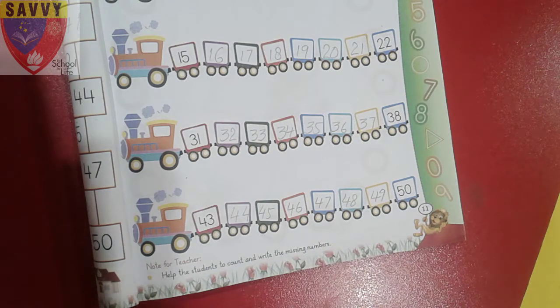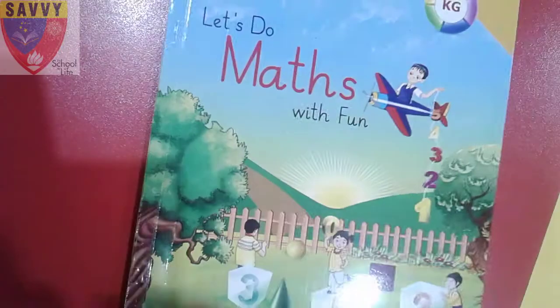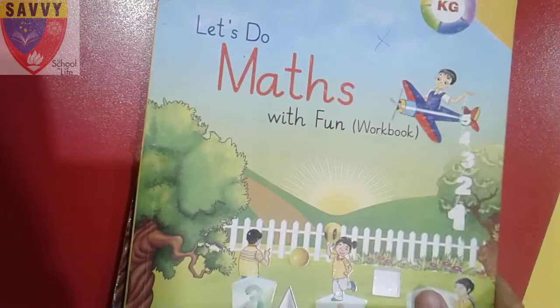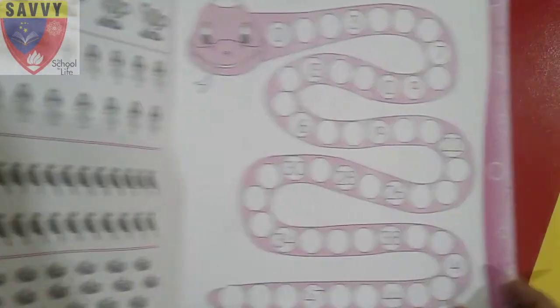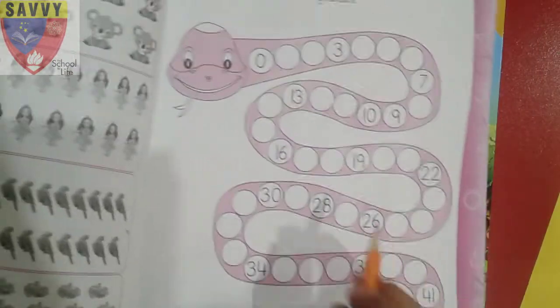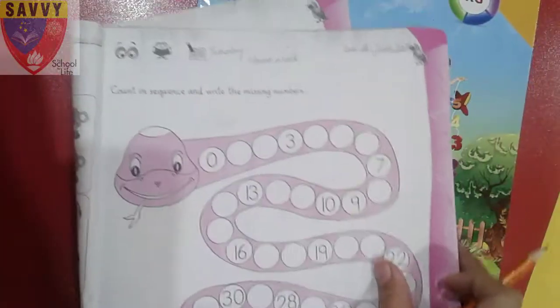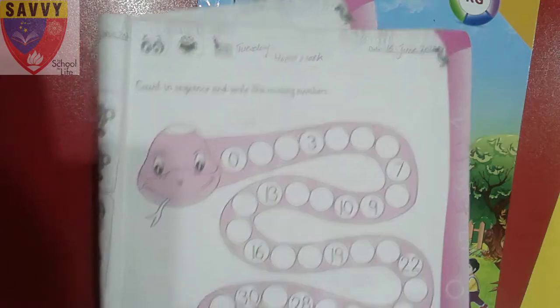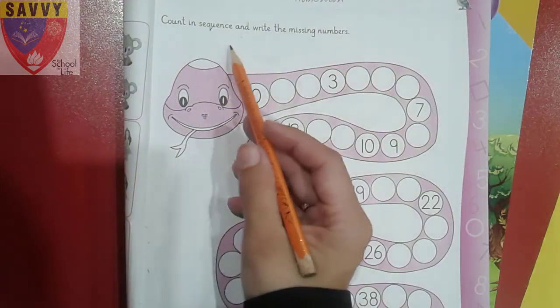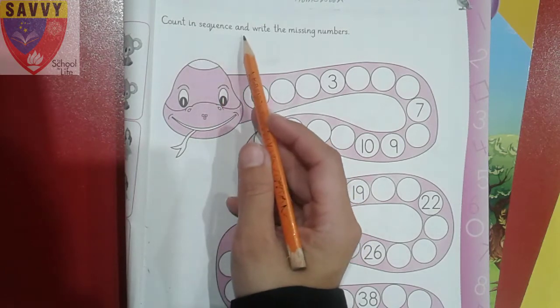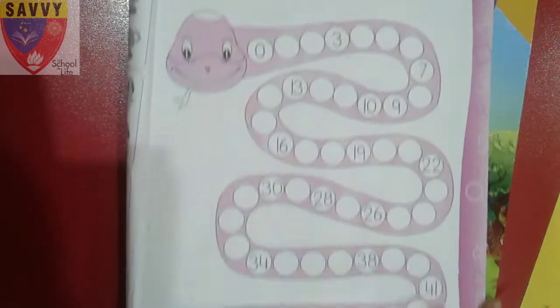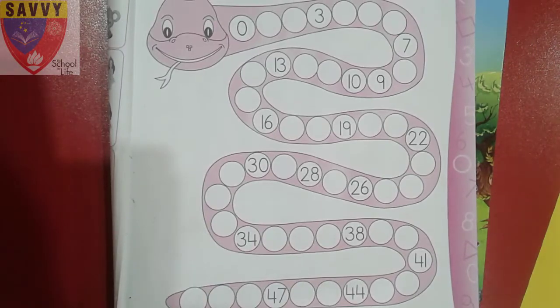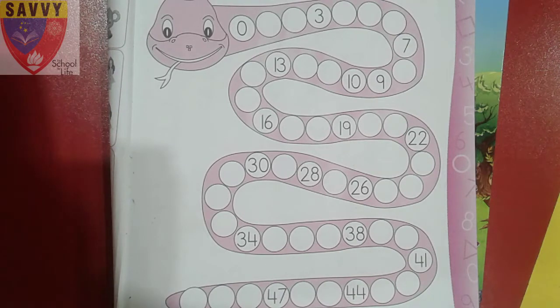So dear students, page number 10 and page number 11 are classwork. And for our homework, open the maths with fun workbook at page number 5. In this sequence, there are zero to fifty missing numbers that you have to write, and this is your homework.